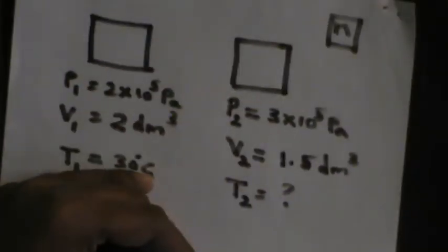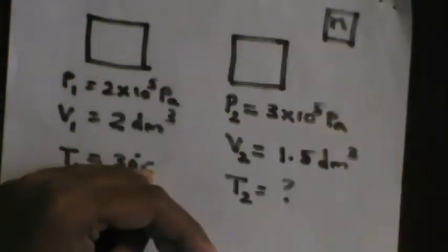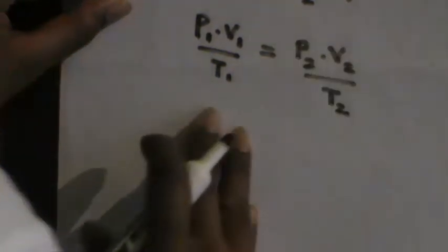Since the number of moles is constant for these two systems, I can easily apply the combined gas law. From the combined gas law, when the number of moles or mass of the gas is constant: P1 times V1 divided by T1 is equal to P2 times V2 divided by T2.